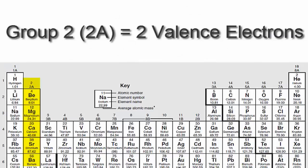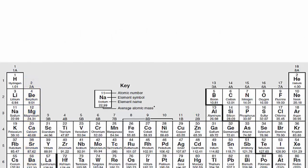If you look at group 2 or 2A, you'll see that those elements have two valence electrons. We'll skip over the transition metals since they're a bit more complicated and probably don't apply to you.